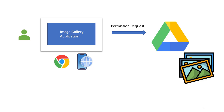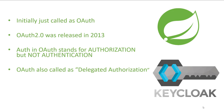OAuth is a standard way of providing authorization — permission for service A, in our case the image gallery application, to access service B, which is the user's Google or Facebook account. The framework was initially called OAuth, and an updated version 2.0 was released in 2013. The A in OAuth stands for authorization, not authentication, because we are providing authorization for a service to access another service. For this reason, OAuth2 is also called delegated authorization.